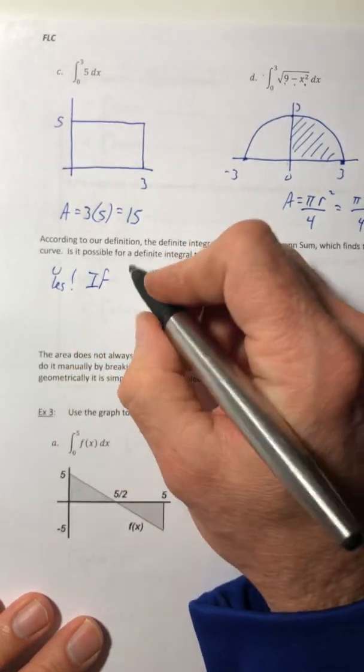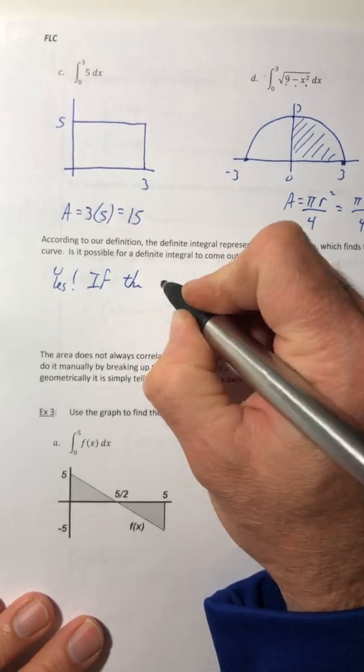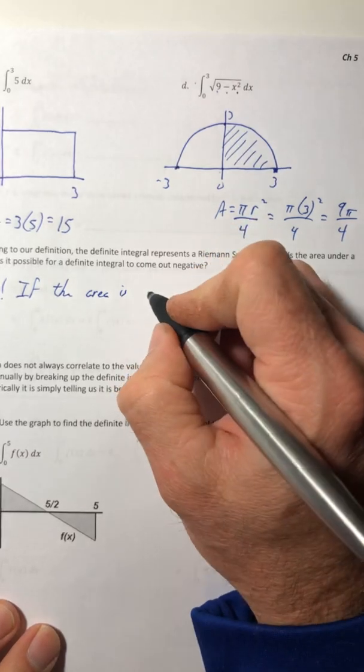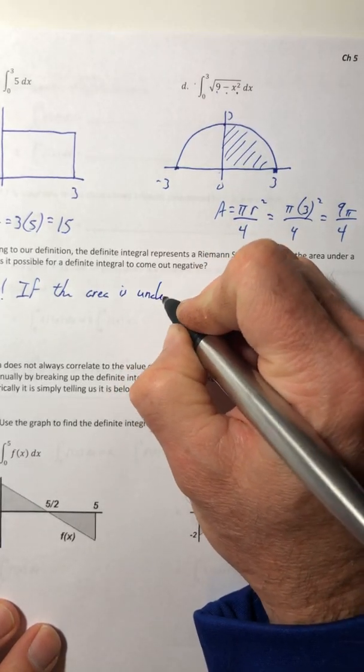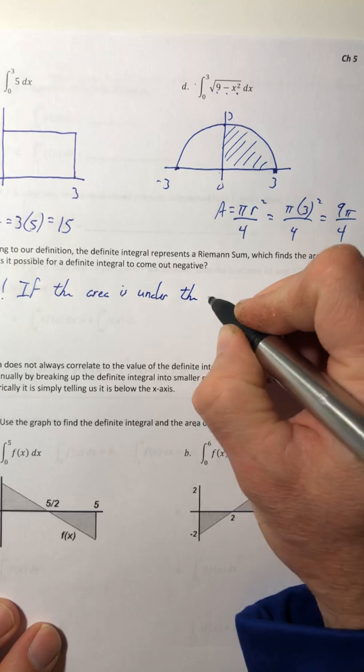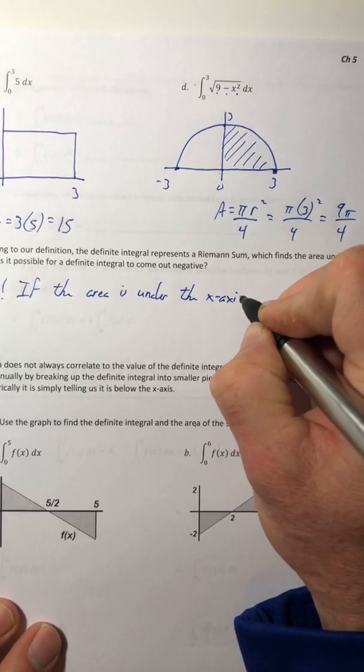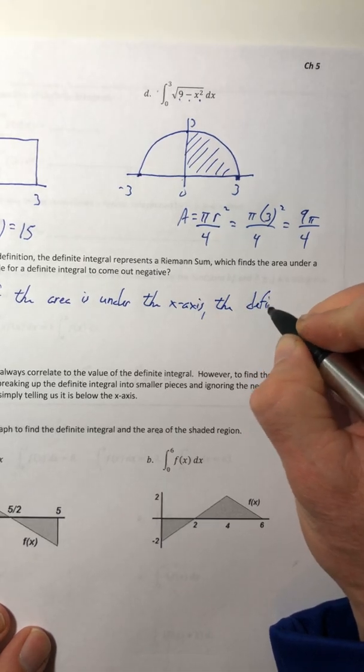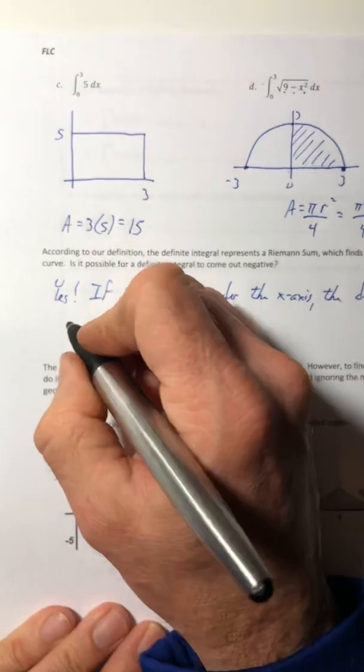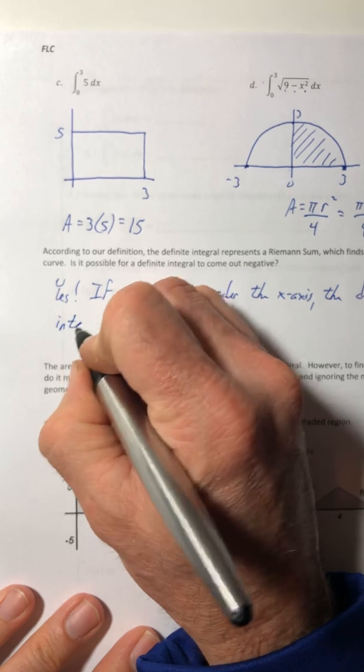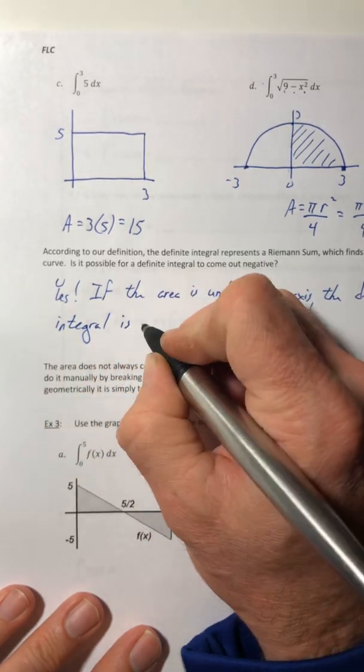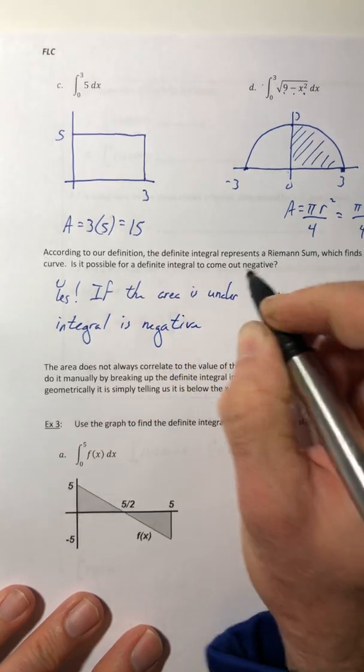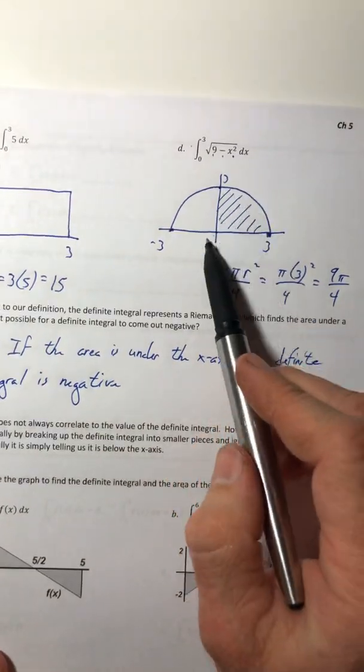Because if the area is under the x-axis, the definite integral is negative. So if this graph would have been flipped upside down, if it would have been, you know, this quarter circle down here,